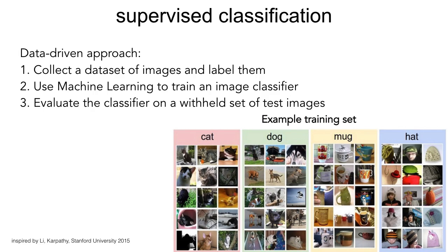This machine learning solution will extract features from the image and try to figure out what's inside. What we do is collect a large labeled dataset of images — for example, lots of pictures of cats, dogs, mugs, and hats put into four folders — and then we use machine learning to train an image classifier. We keep some images aside in a special set called the test set, and we evaluate the classifier on it. If it's not doing well, it means we didn't train the system appropriately or we have the wrong model. If it's doing well enough, we're done.